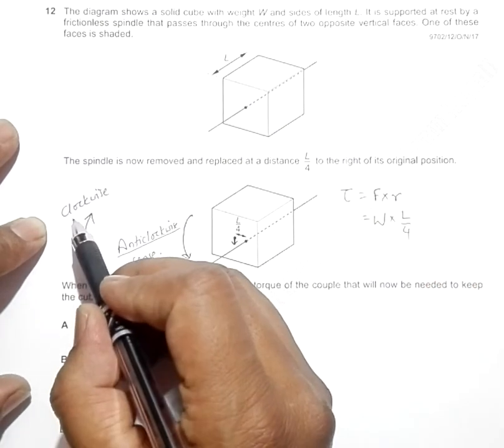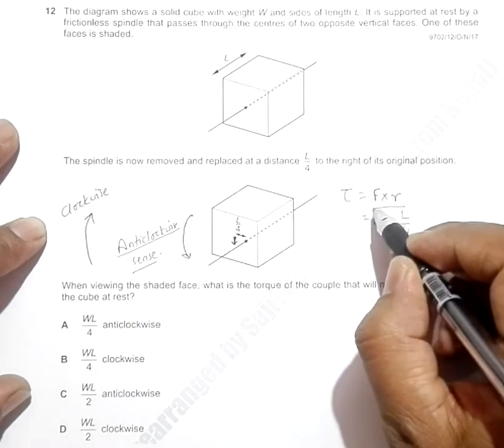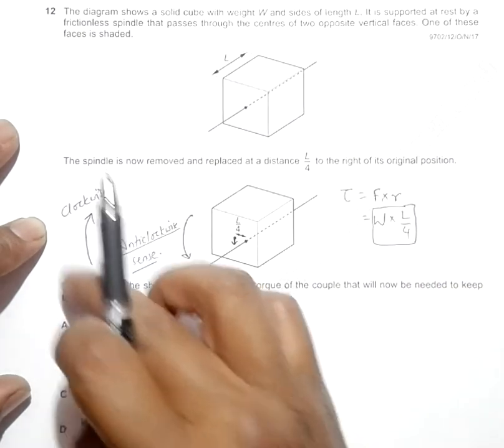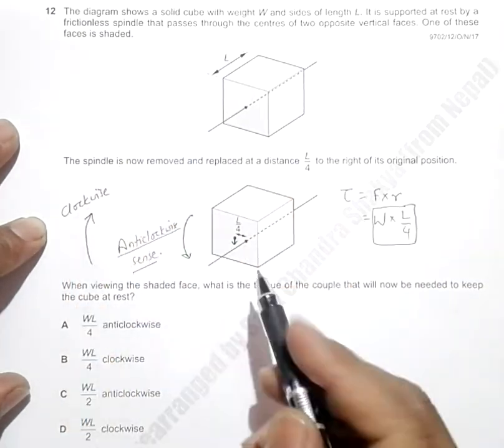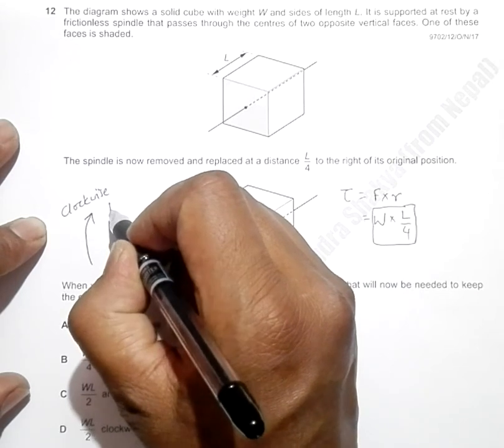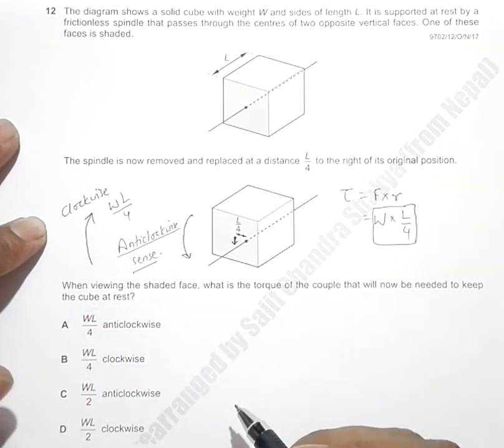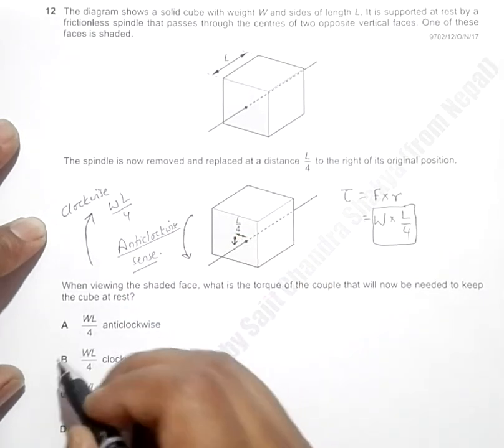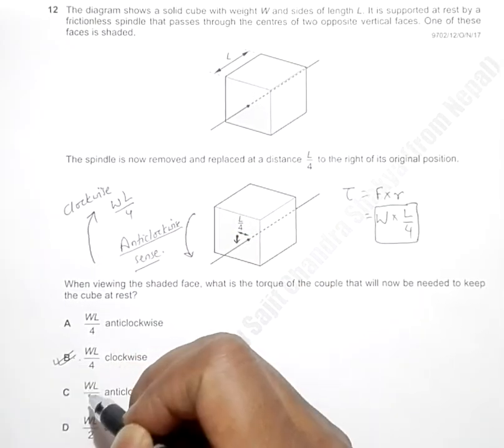then the clockwise torque should also equal this value. So it is WL/4, and the choice that supports this is WL/4 clockwise, which is choice B.